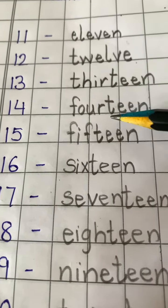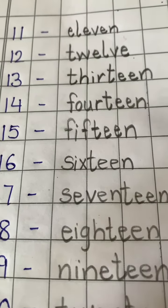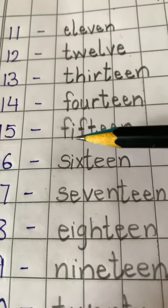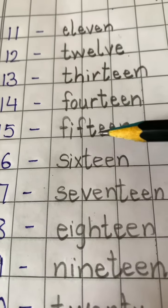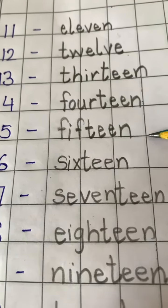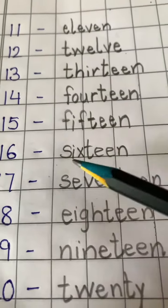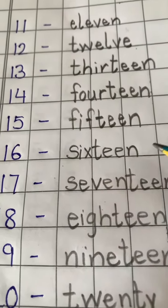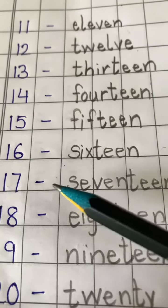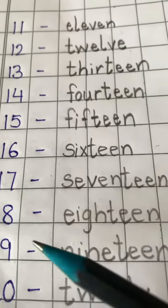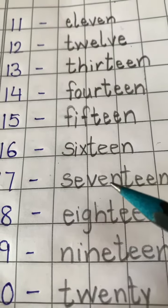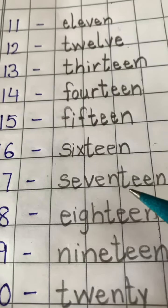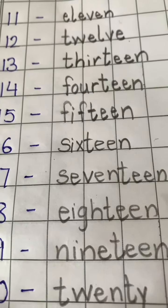14 — F, O, U, R, T, E, E, N — fourteen. 15 — F, I, F, T, E, E, N — fifteen. 16 — S, I, X, T, E, E, N — sixteen. 17 — S, E, V, E, N, T, E, E, N — seventeen.